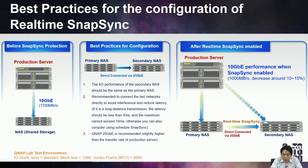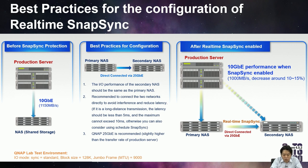If you want to use real-time SNESync, here are the best practices for configuration. First, the I/O performance of the secondary NAS should be the same as your primary NAS — meaning the NAS model and disk model should match. Second, the network latency should be less than 10 milliseconds. We strongly recommend directly connecting the primary NAS and the secondary NAS with a 25GbE Ethernet adapter. For more detailed recommendations, you can refer to our white paper on the QNAP website.